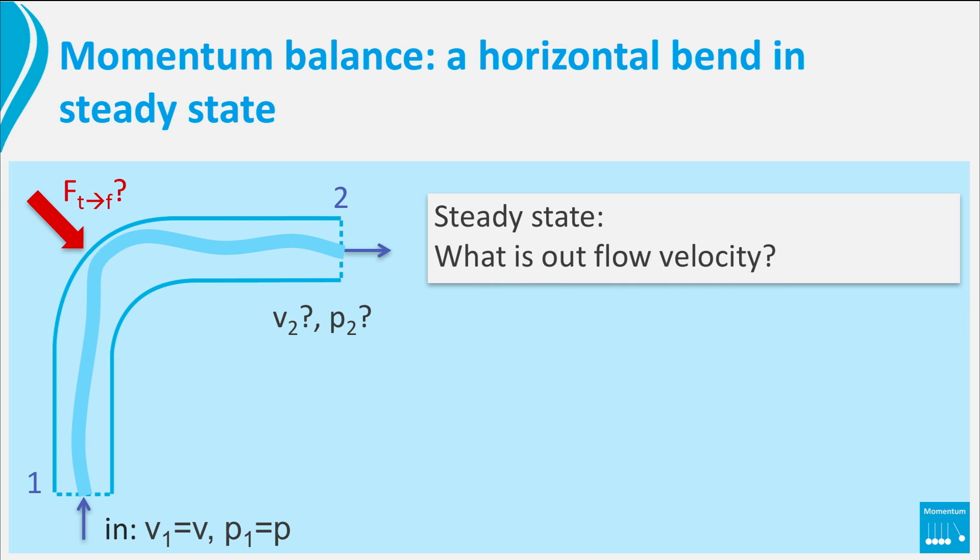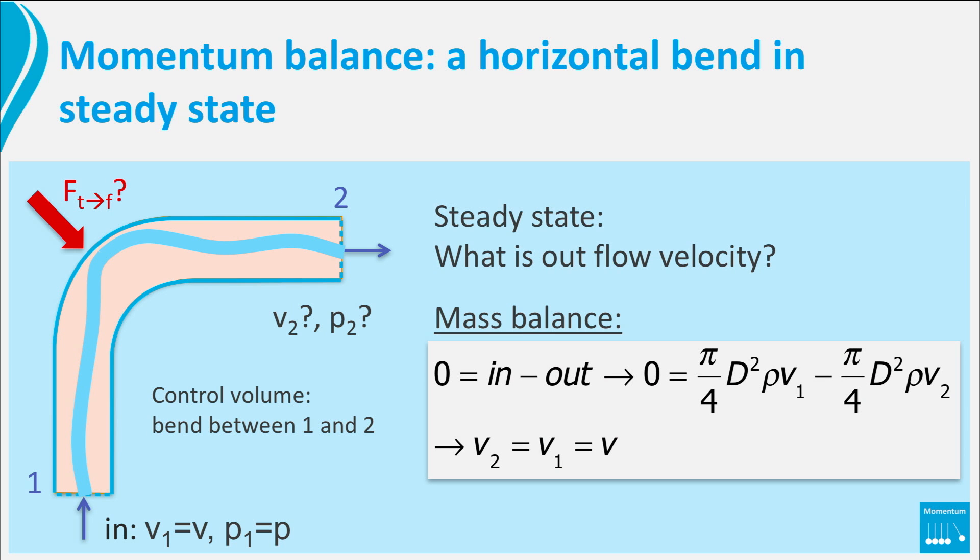Ok, first the velocity. It seems possible to find it via a mass balance. So we first need a control volume before we can actually execute a mass balance. It seems logical to take the band between 1 and 2 in the drawing. Then we set up a mass balance. In steady state it reads 0 is in minus out, as there is no production of mass in the band. Using that the tube has a constant diameter at in and outlet, we find that the value of the outlet velocity is equal to that of the inlet. Note the value, not the velocity as a vector.